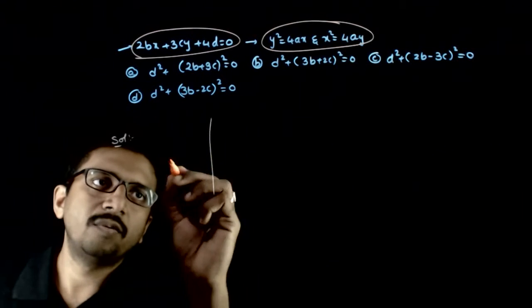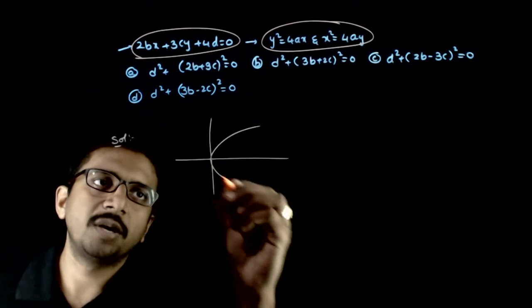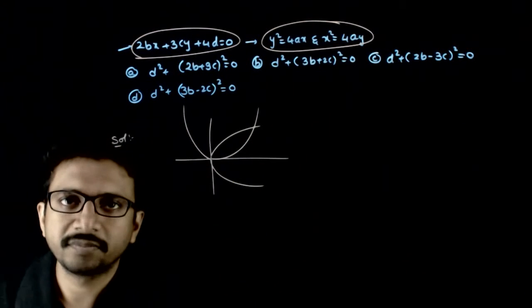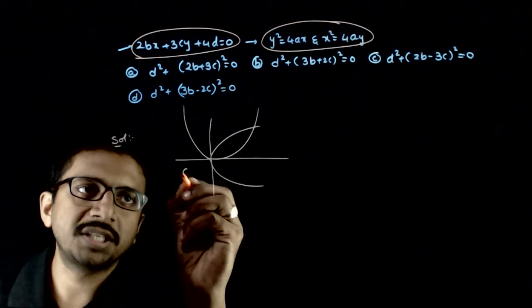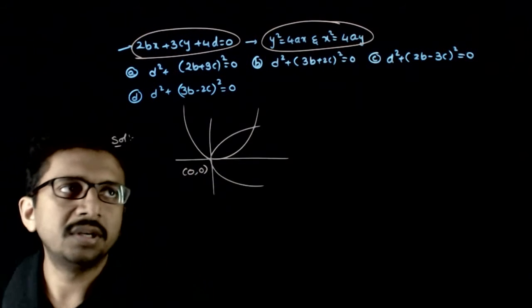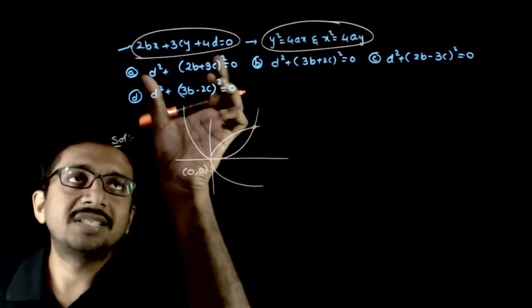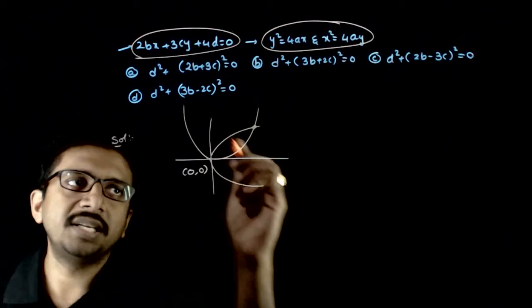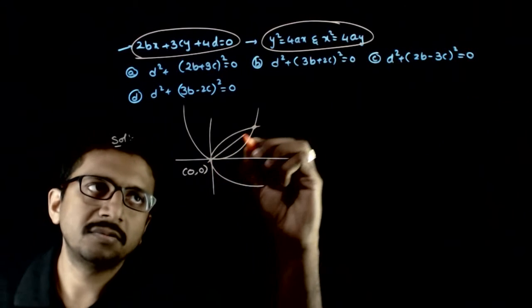We know that y squared equals 4ax is a horizontal parabola and x squared equals 4ay is a vertical parabola. Now, one point of intersection is obviously (0,0). Both of them have vertex as (0,0) and this line passes through both the points of intersection. So that means this line is nothing but this line.